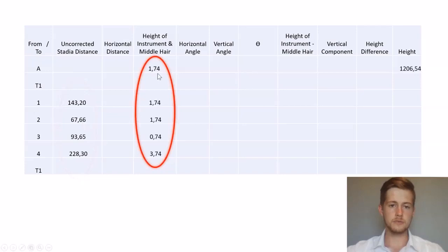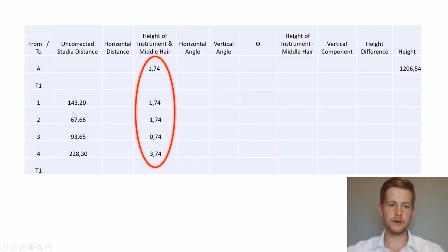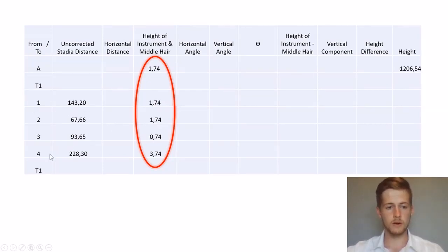Next, we'll fill in our height of instrument which is 1.74, and then we'll fill in our middle hair readings for each point. At our first point we had a middle hair reading of 1.74, and at our fourth point we had a middle hair reading of 3.74.